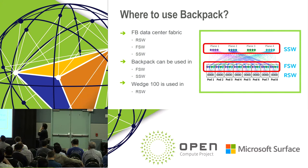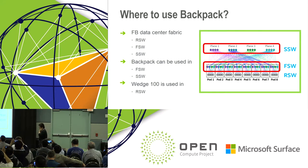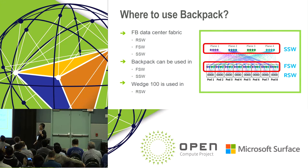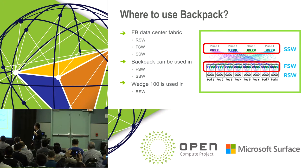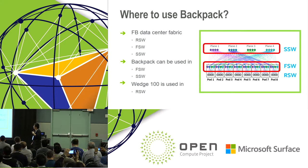Where do we use Backpack? Facebook's data center fabric network has three tiers. The bottom tier is the rack switch — we use Wedge 100 today. The second tier we call the fabric switch, and the top tier is the spine switch. Both the fabric switch and the spine switch can use Backpack. It's just software-different with the same hardware.